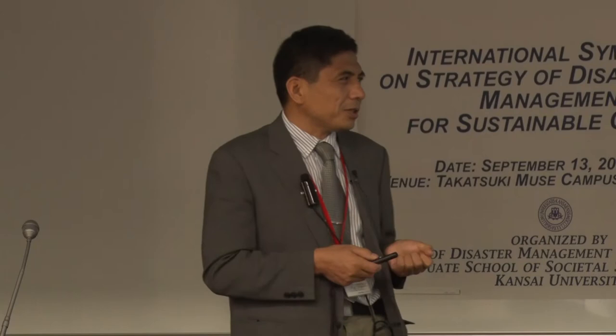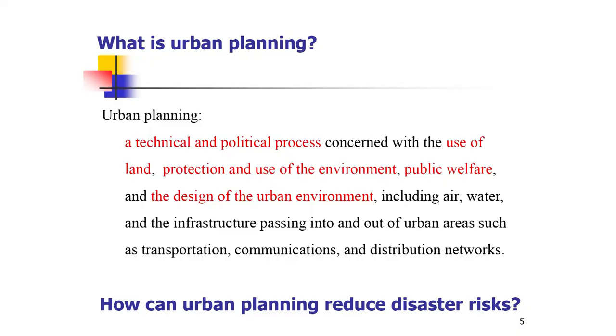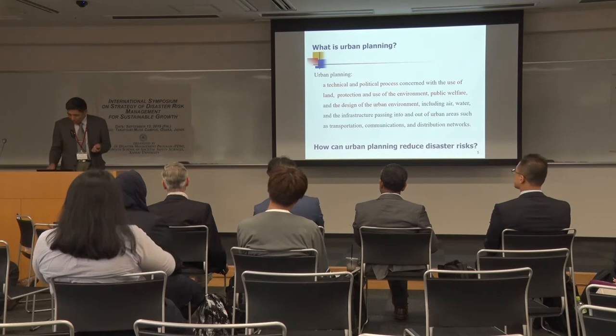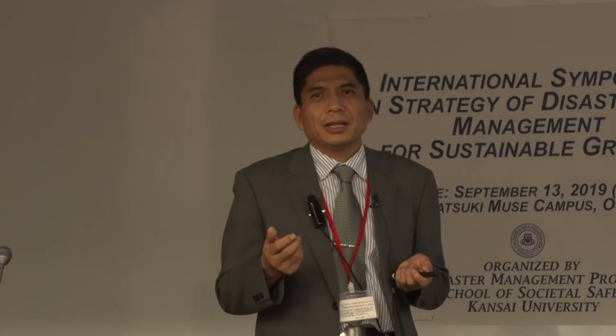What is urban planning? Urban planning is a technical and political process concerned with the use of land, protection and use of the environment, public welfare, and the design of the urban environment. Today I will only talk about the major aspects from urban planning. I think there are many ways to reduce disaster risks — the most important are three ways.